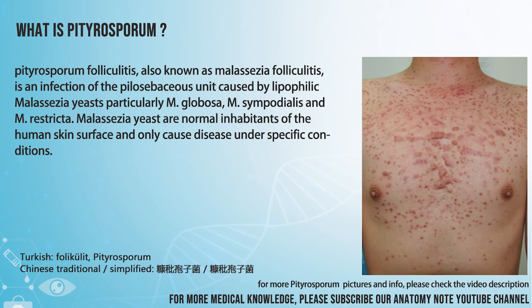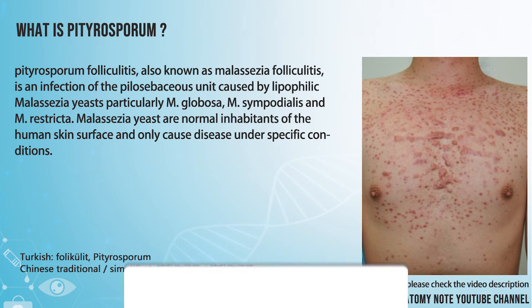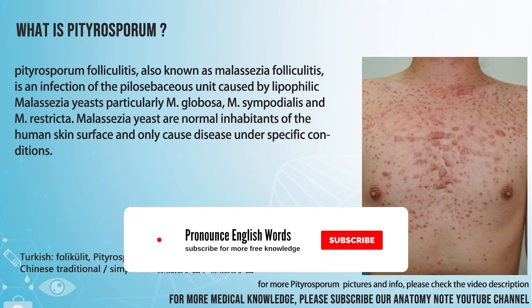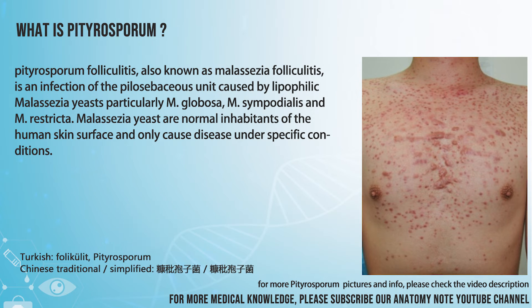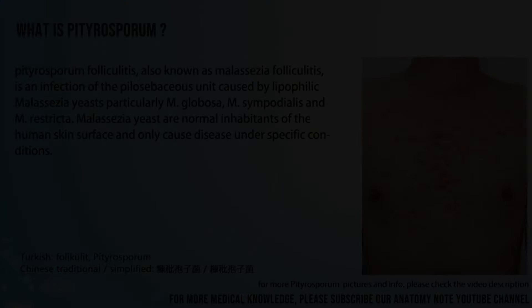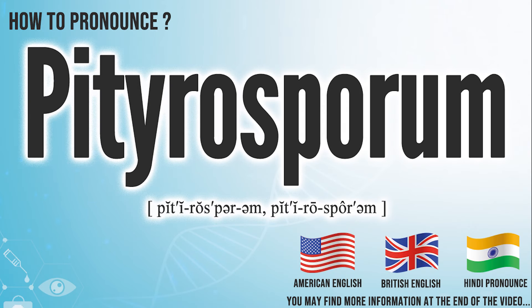Pityrosporum folliculitis, also known as Malassezia folliculitis, is an infection of the pilosebaceous unit caused by lipophilic Malassezia yeasts, particularly M. globosa, M. sympodialis, and M. restricta. Malassezia yeasts are normal inhabitants of the human skin surface and only cause disease under specific conditions. Did you get it? Let me know in the comments.